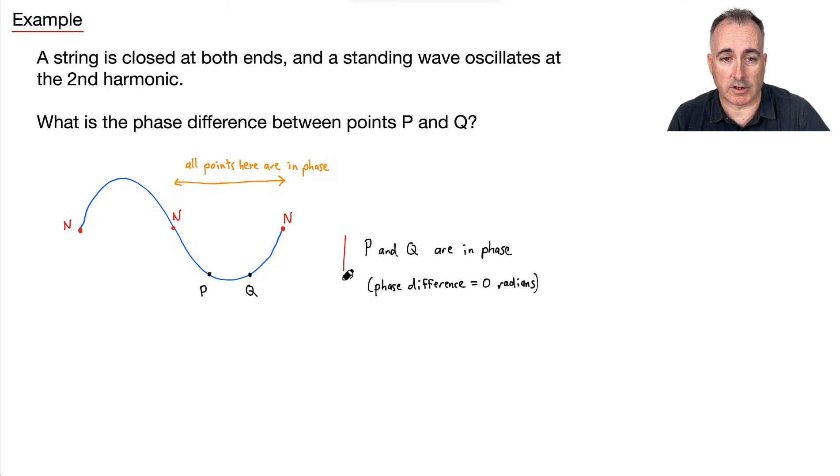So P and Q are in phase. In other words, the phase difference is zero radians. Had they asked for a point here and a point over here, then we would say they are out of phase. In other words, the phase difference is going to be pi radians.